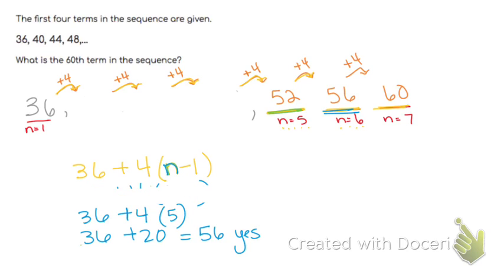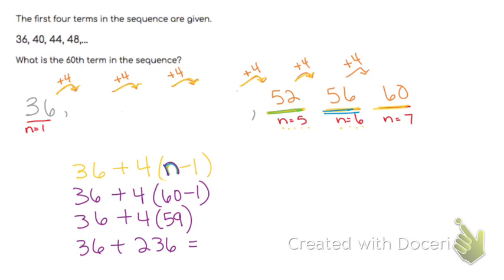So now that we have figured that out by taking a closer look and analyzing our sequence and how to get the next term, we can now substitute 60 in for n and see what the 60th term is. And we see that the 60th term is 272.